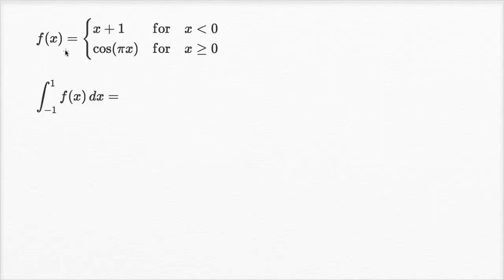We have an f of x right over here, and it's defined piecewise. For x less than zero, f of x is x plus one. For x greater than or equal to zero, f of x is cosine of pi x.